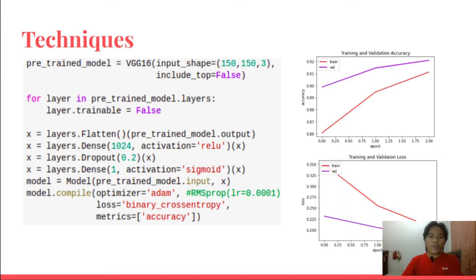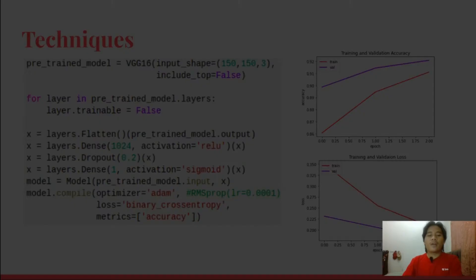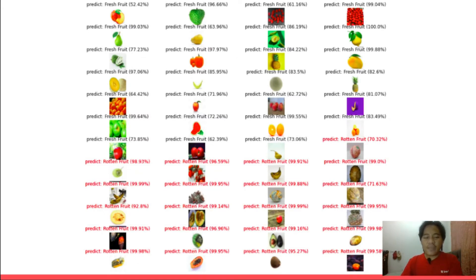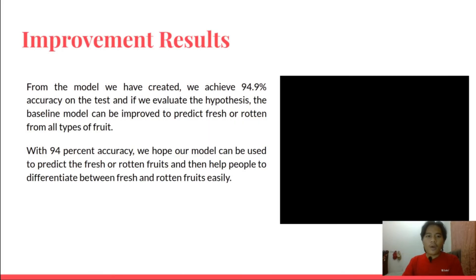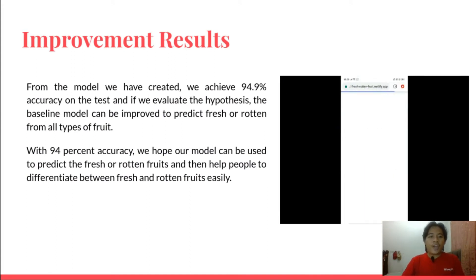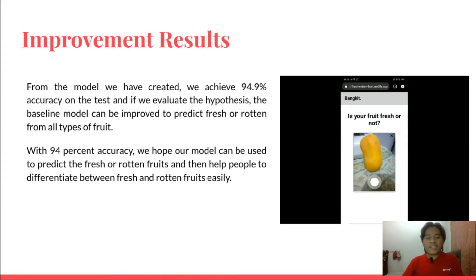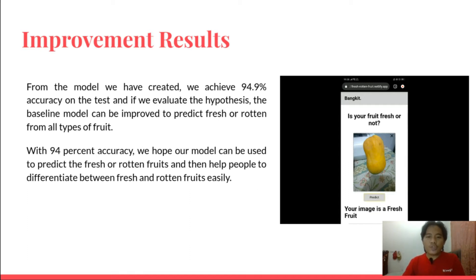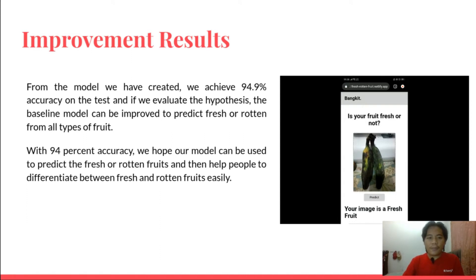Here is the code of the model. After we train the model, we can see the training and validation accuracy and loss have a good graph. The validation accuracy is 92%, which is better than the baseline model using InceptionV3. Here is the result of our test image. From the model we created, we achieve 94.9% accuracy on the test set. Evaluating the hypothesis, the baseline model can be improved to predict fresh or rotten from all types of food. With 94% accuracy, we hope our model can help people differentiate between fresh and rotten from all types of food easily. In the video you can see our app predicting the fruit.